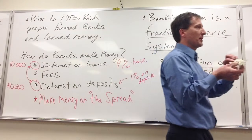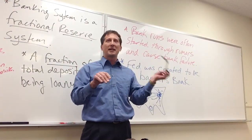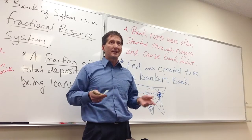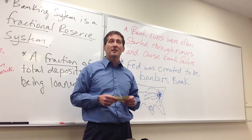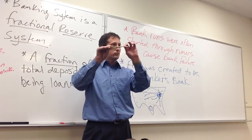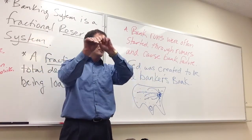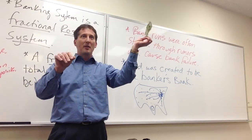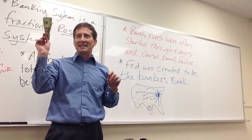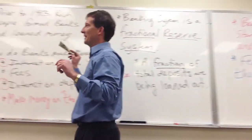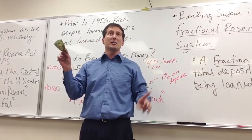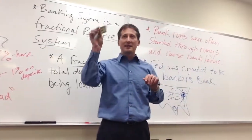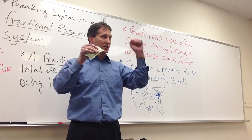What happens when the government runs the printing press? If they say, we need weapons of mass destruction, we need a new airplane from Kansas, and instead of raising taxes they just run the printing press — the value of the money goes down. Inflation goes up, the value goes down. That is exactly what Zimbabwe did. They started printing off money because they couldn't collect taxes from people.